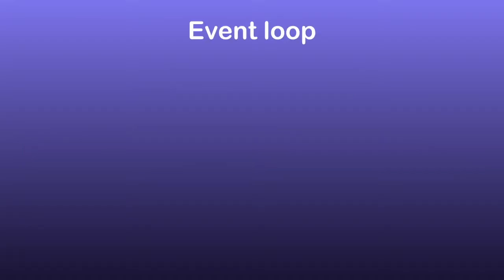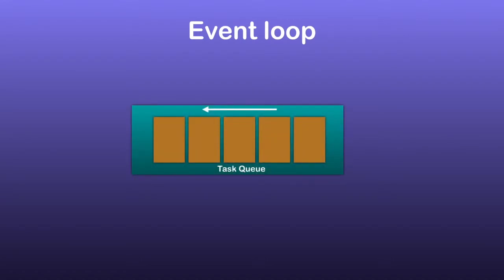Here is the super simplified version of how event loop works. There is a queue for JavaScript engine to use. This queue is called task or callback queue. Any task that need to be run by the JavaScript engine is added to this queue.